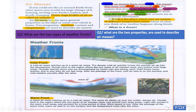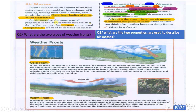An air mass has some general properties as the land or water over which it forms — two properties. My pupils, if I ask the question: what are the two properties used to describe air masses? You can answer this question. Number one: moisture. Number two: temperature.